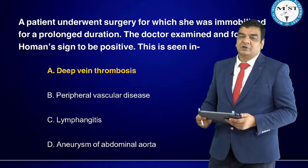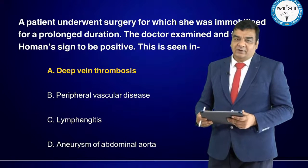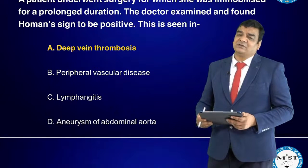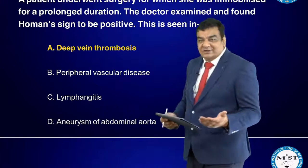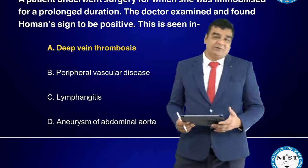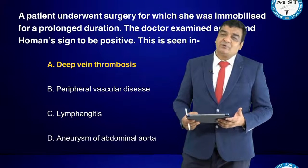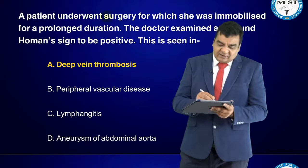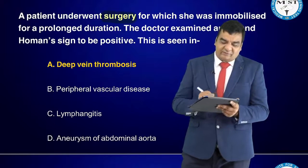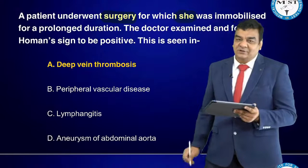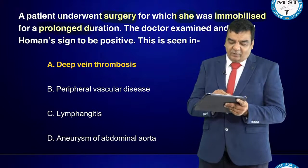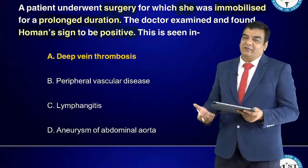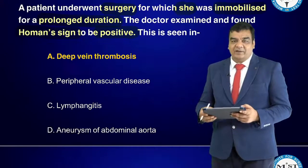A patient underwent surgery and was immobilized for a prolonged duration; the doctor found Homan's sign to be positive. Homan's and Moses signs are seen in deep vein thrombosis (DVT). This is a single-liner question — post-surgical immobilization plus positive Homan's sign equals DVT. A lady also presented with sudden arterial occlusive disease; the poorest prognosis factor among the 5 P's (pain, pallor, pulselessness, paresthesia, paralysis, plus poikilothermia) is paralysis, indicating category 2B ischemia with high risk of limb loss.